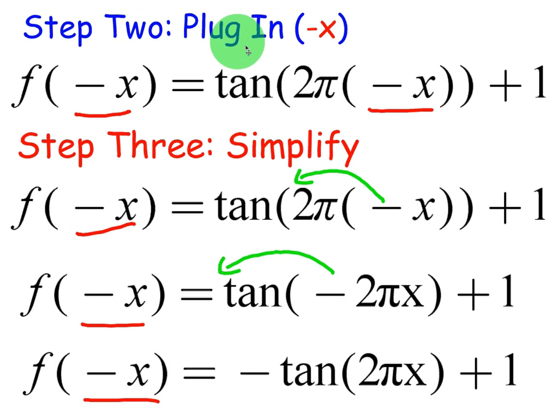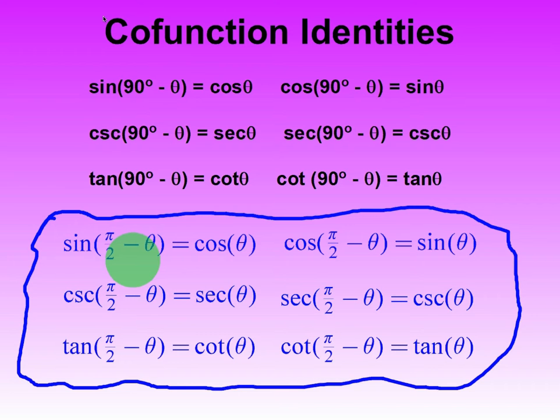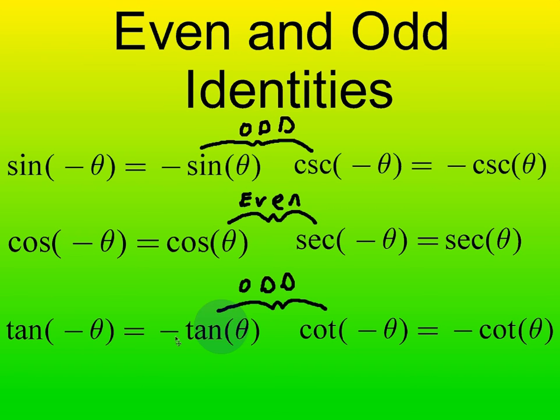Step two is to plug in negative x. That's because we have to prove, does f of negative x equal negative f of x? So we're plugging in negative x in place of x for 2 pi x. And again, we can use some commutative properties. We can move the negative out in front of the 2 pi x and then we can furthermore pull it all the way out because tangent is, let's go to the odd function identities.